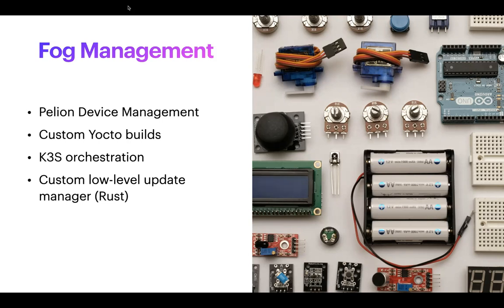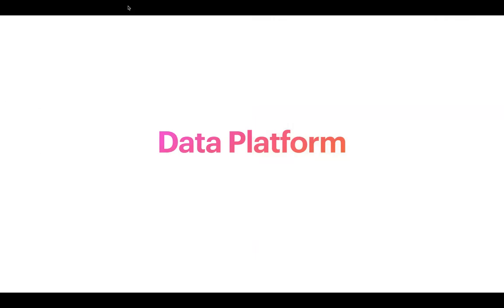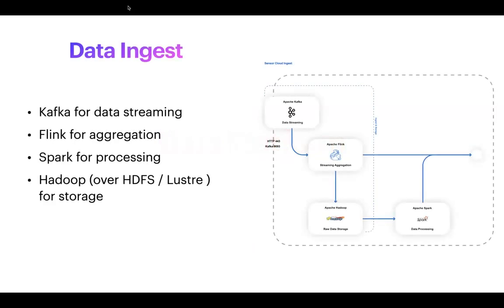I'm going to focus on the data platform — there are many other components including mobile apps, web apps, and integration components, but I'll focus on where the pipelines are most interesting. For ingest, we used Kafka for data streaming, Flink for aggregation, Spark for processing, and then HDFS and Lustre for high-performance storage. Each cloud ingest area would handle around 320 terabytes of data per month on average, so we had to ensure the file system was high-performance.